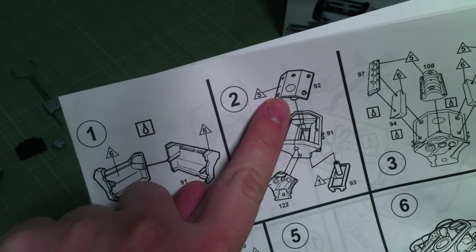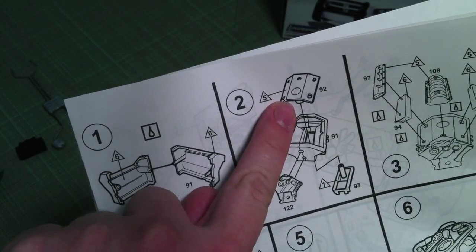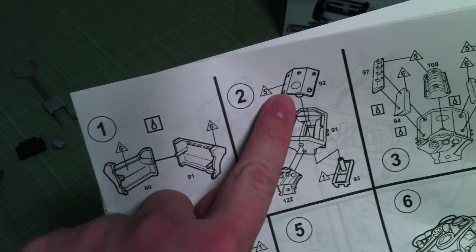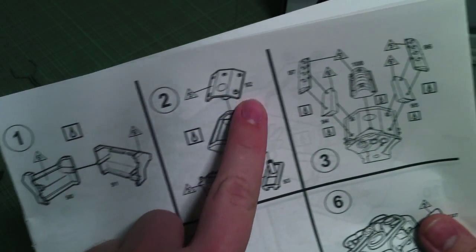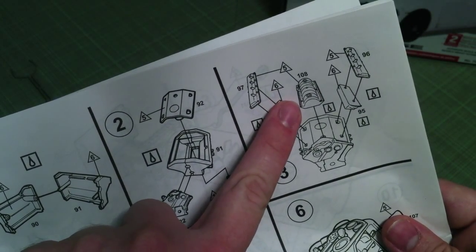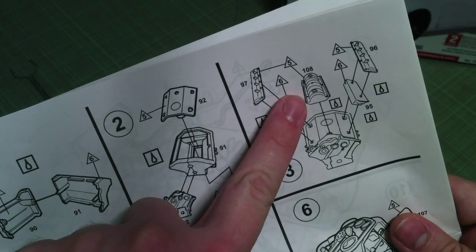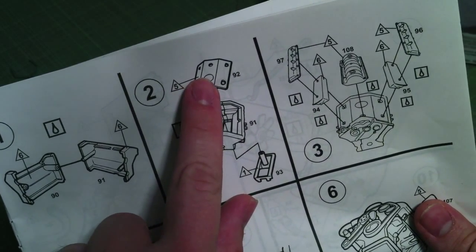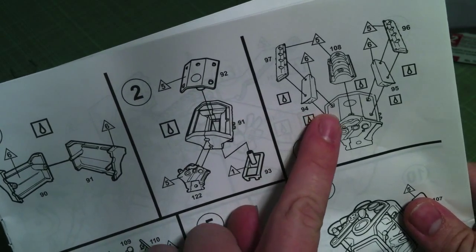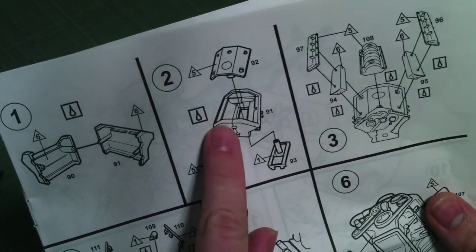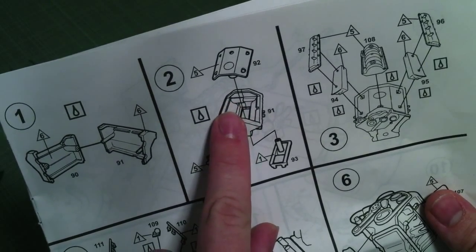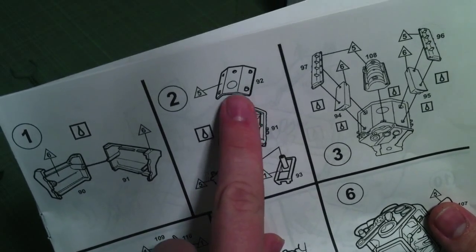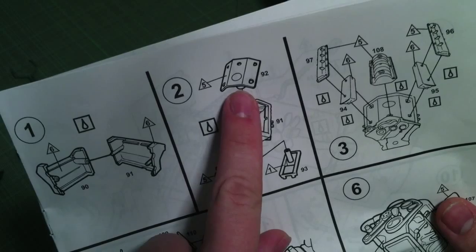On the second step, this top piece right here that goes on to the top of the block, they have it backwards and I did make the mistake of putting it in backwards and I had to pull it all apart. If you put this in backwards, then once you put the intake manifold on there it actually will not fit. You can see right here that they have the large hole in the front, but then on the second step the large hole is in the back. So make sure you don't put this top piece in the way they have it. Flip it around so that it's in the other direction.